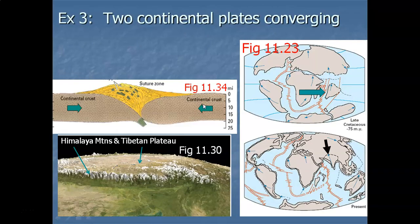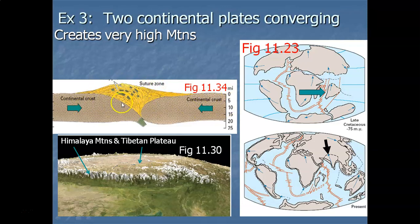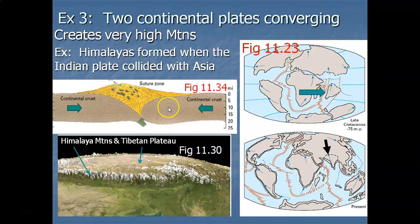I'll definitely be talking about how the Hawaiian Islands were formed in the next lecture. Finally, my third scenario of plates meeting is two continental plates converging. You've got two thick masses of continental crust meeting, and what happens is they meet, uplift, fold, and fault — masses of rock accumulating and creating really high mountain ranges, very very high.